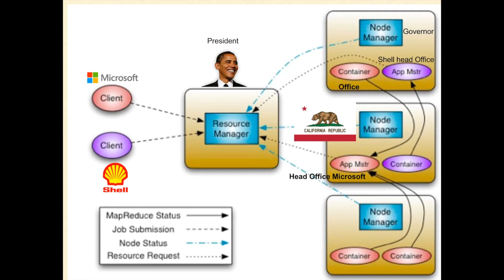It can be better understood if we think of YARN as a country where the resource manager is the president, and clients are organizations like Microsoft or Shell who want their work to be done by establishing offices. Each node is a state, such as California. The node manager is the governor of the state. The container is the place for the office. The application master is the head office. Though it looks like an oversimplification, it would help us understand how YARN works.